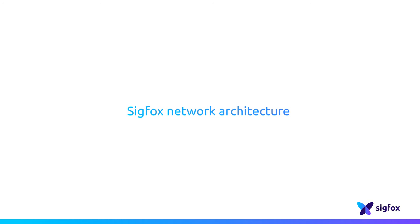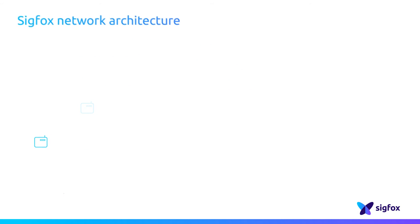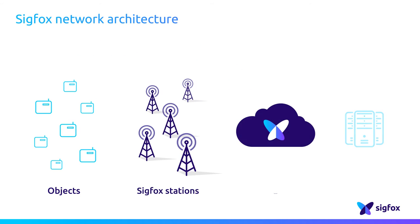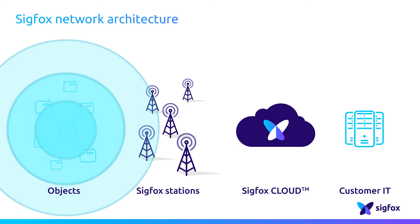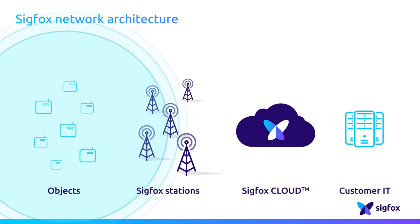Sigfox has built its simplicity deep in objects and network architecture. The star topology of the Sigfox global network is really simple. Billions of objects transmit their messages to the Sigfox network when the radio signal sent reaches the base stations within the range.